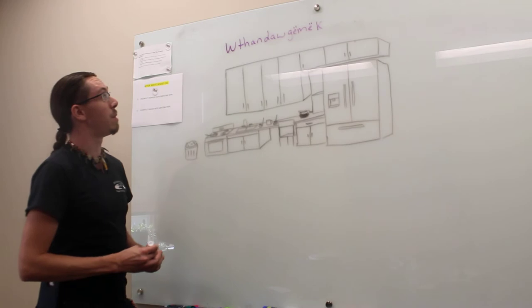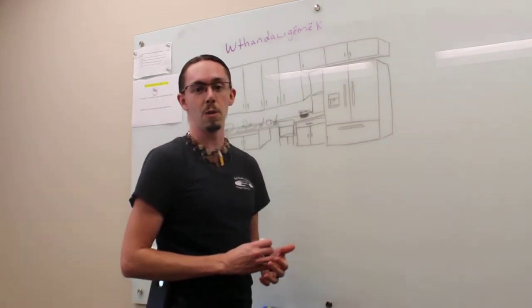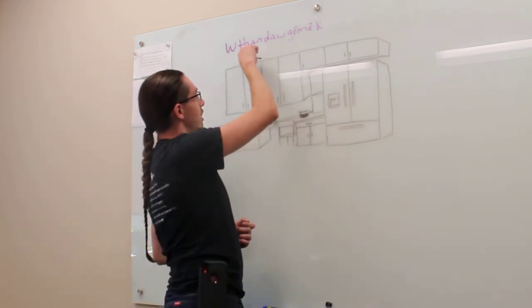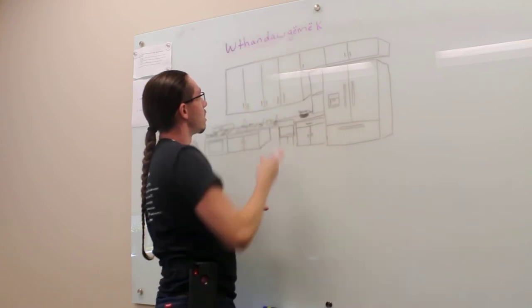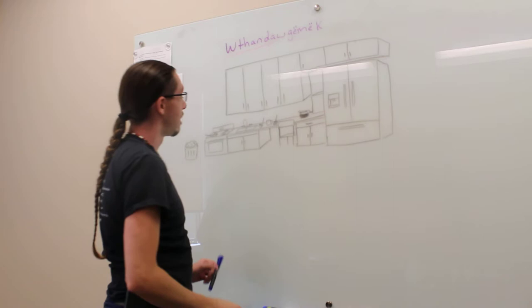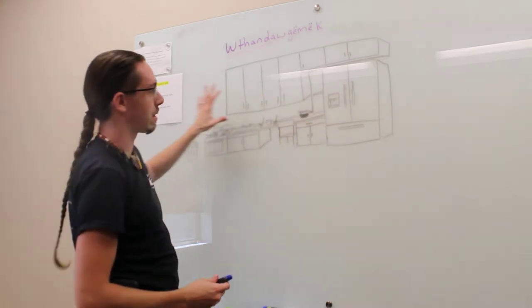Bonjour. So today we're going to learn about some items that are in what we call Wajandao G'muk. Wajandao G'muk is the kitchen. Wajanda is to cook. G'muk refers to the place where that happens. So we got our kitchen laid out here, our Wajandao G'muk.